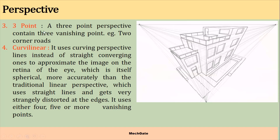Next is three-point perspective projection, which has three vanishing points. In this figure, you can see a three-dimensional building. All these edges are vanishing at one point, all these edges are vanishing at a second point, and the perpendicular edges are vanishing at a third point. It is very difficult to visualize and draw three-point perspective projection, so it is not commonly used in practice.